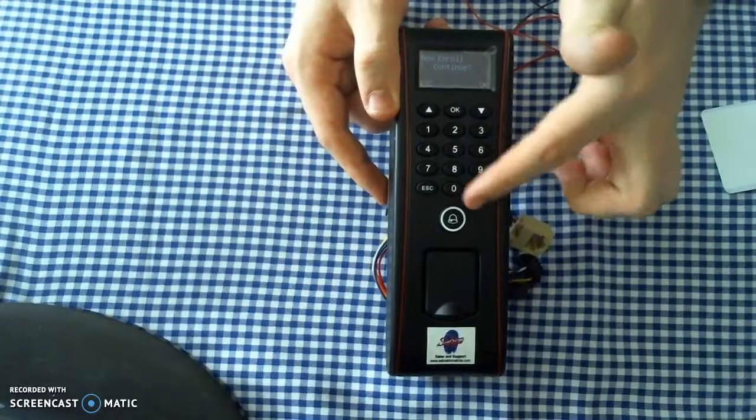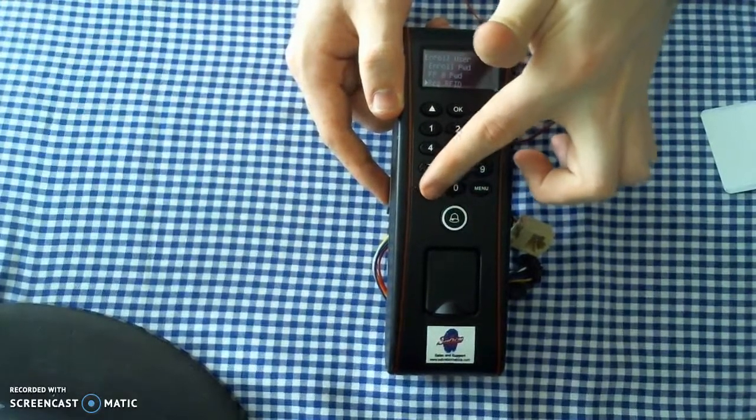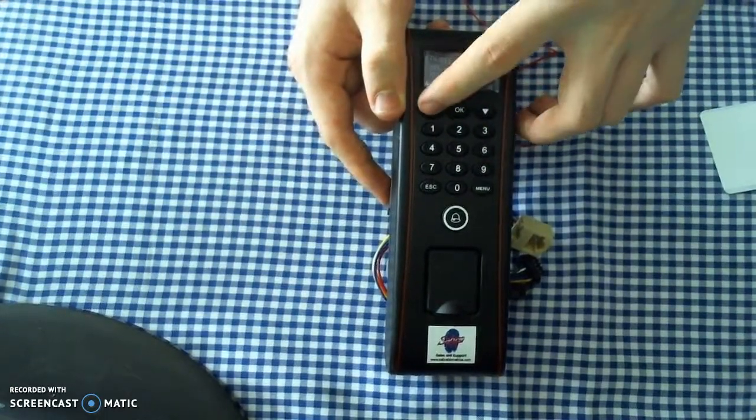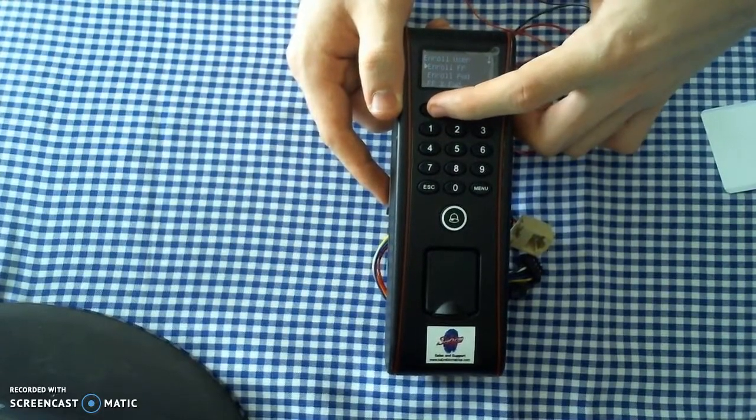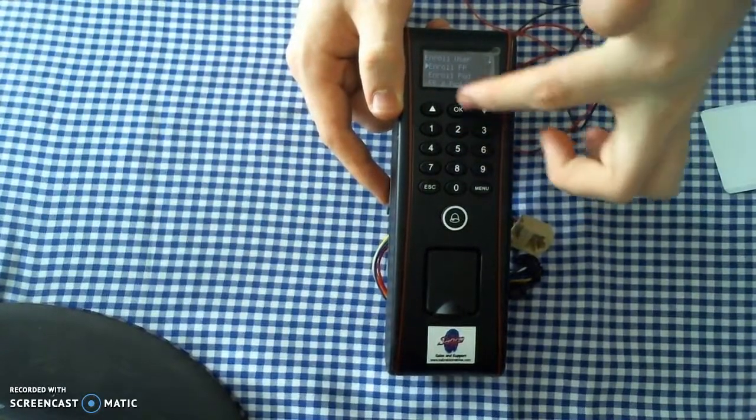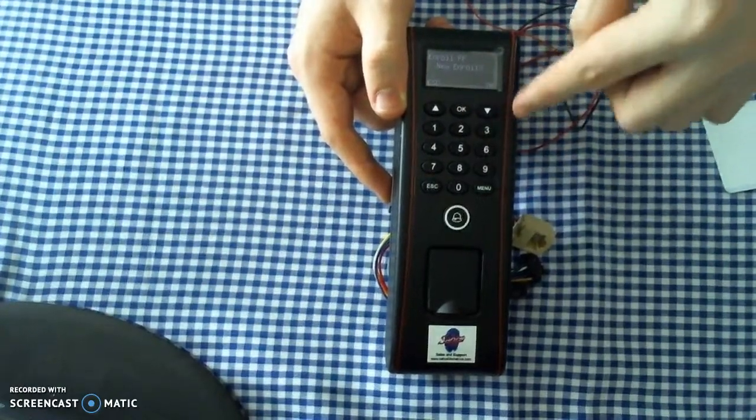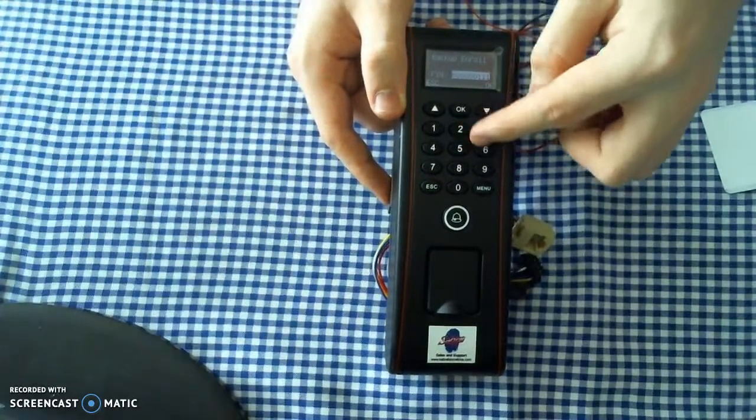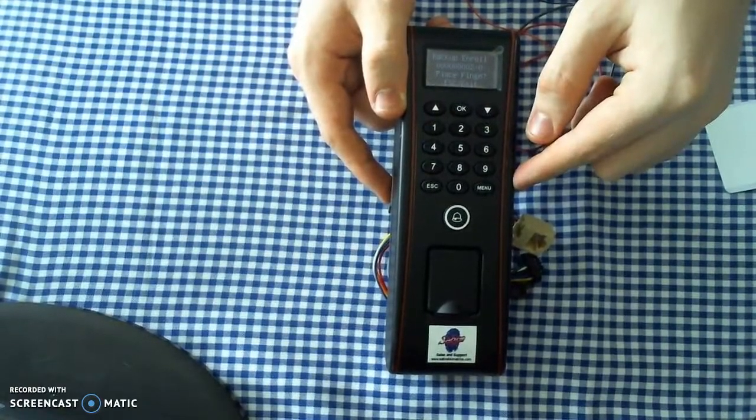We're going to then say Escape, and we're going to then go to Enroll Fingerprint and say OK. We're going to say it's not a new enroll, because we've already got this user on here. So we're going to say Escape. And the backup enroll is going to be number 2, for that same employee we just added.